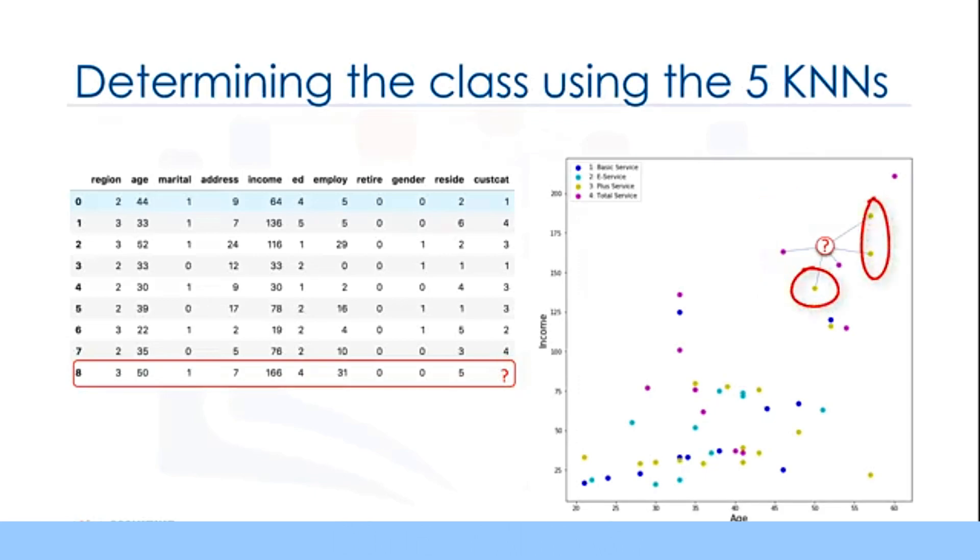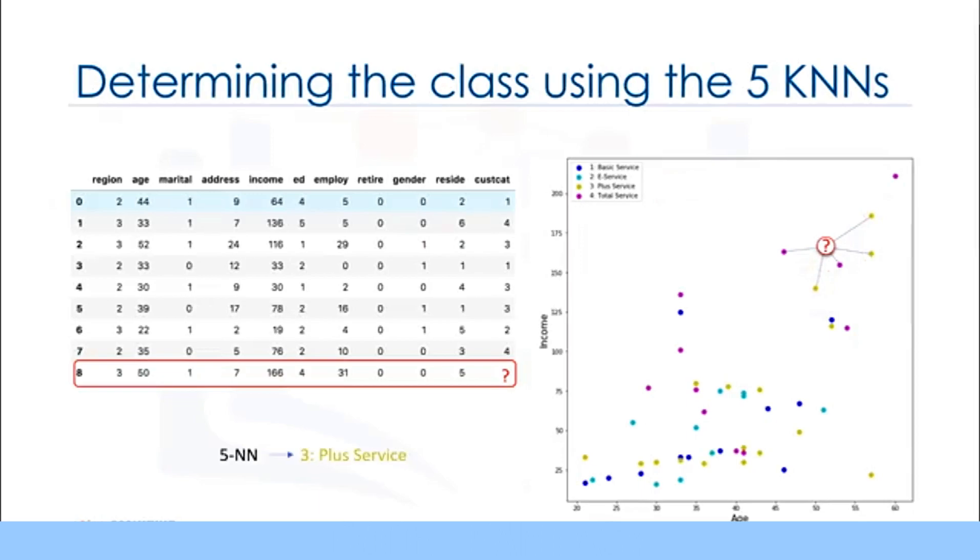In this case, we'd see that 3 out of 5 nearest neighbors tell us to go for class 3, which is plus service. Doesn't this make more sense? Yes, in fact, it does. In this case, the value of k in the k nearest neighbor's algorithm is 5. This example highlights the intuition behind the k nearest neighbor's algorithm.